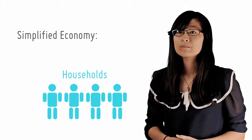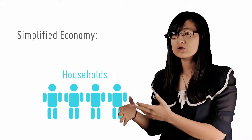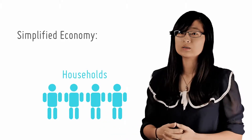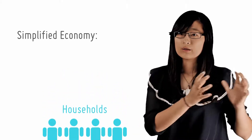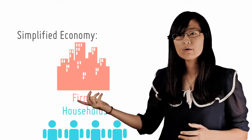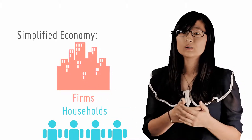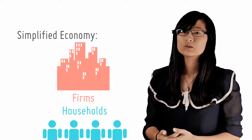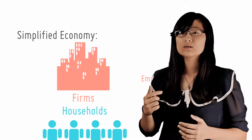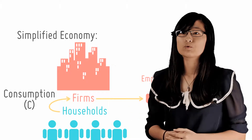Let's start with a simplified economy. On one side, you have households, which are made up of people like you or I that spend the money they earn on the things they want. On the other side, you have domestic firms. Just like the shop around the corner, these businesses employ people to sell you goods and services. The two arrows that link these two entities are national income and consumption.